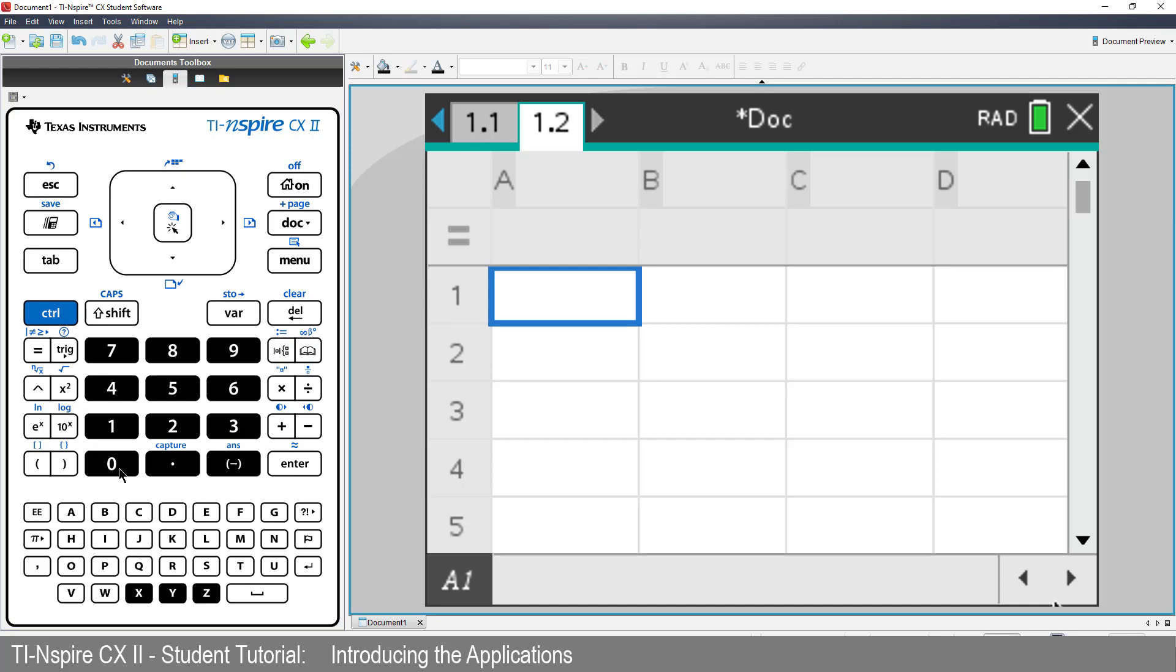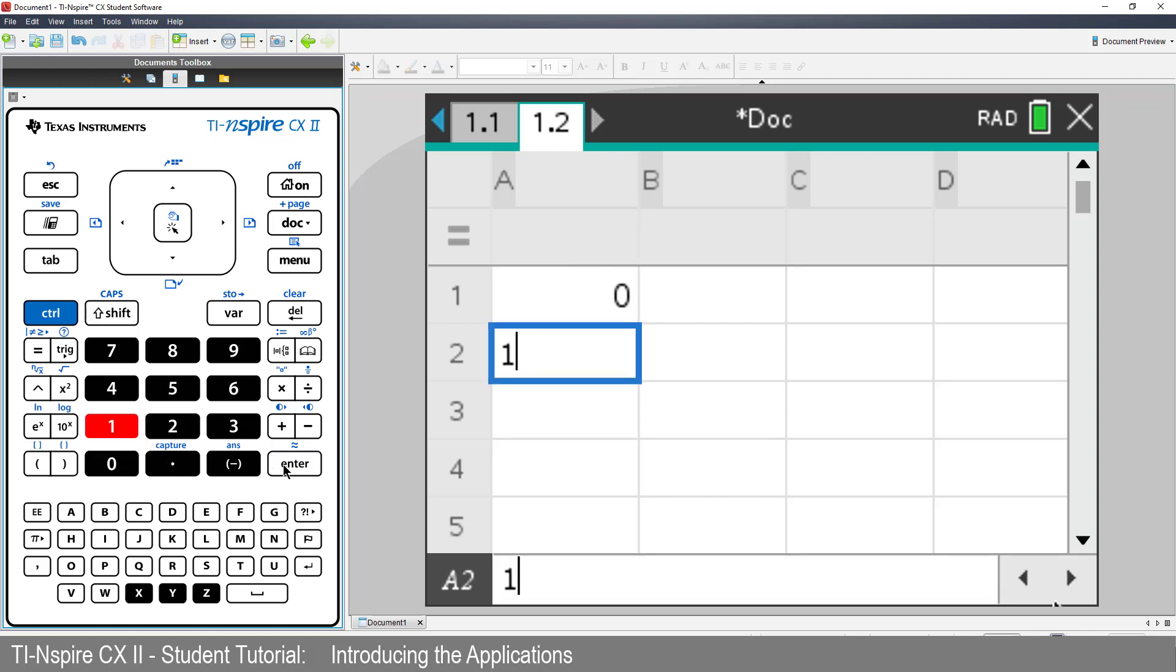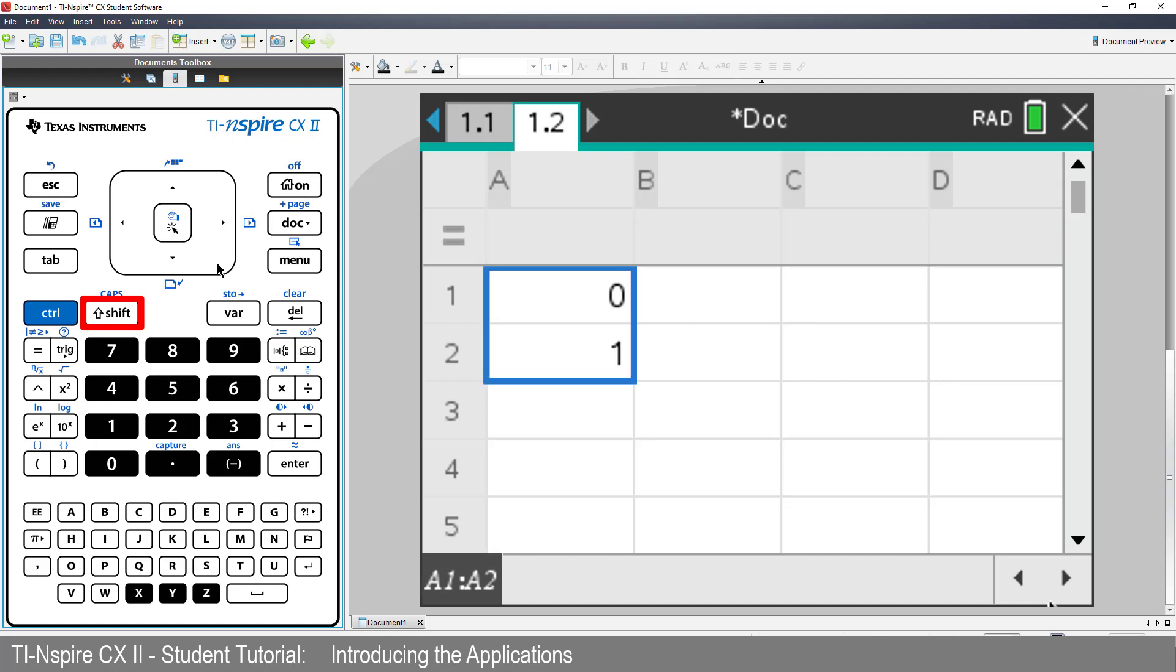A spreadsheet has been added to our current document. Type a 0 in cell A1. And a 1 in cell A2. I could continue to enter these counting numbers. Or navigate back to cell A1. Hold down the Shift key. And arrow down to cell A2. You've now selected the first two cells.